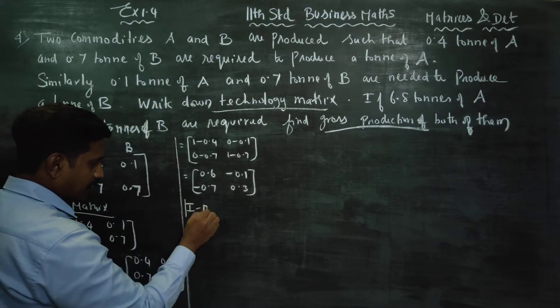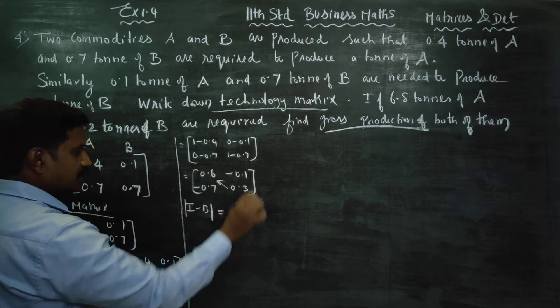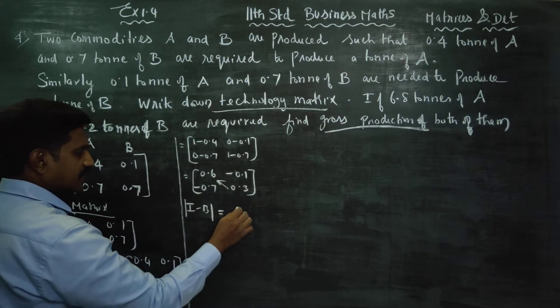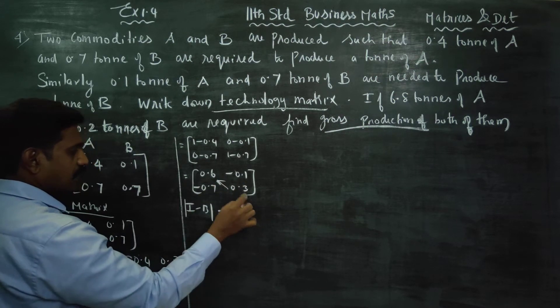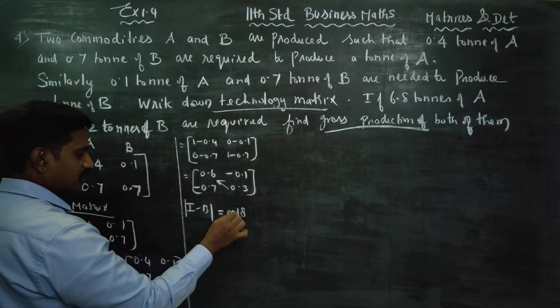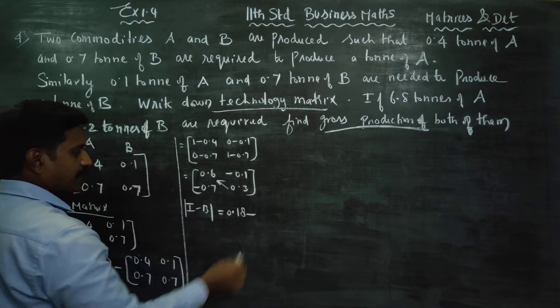Determinant of I minus B: 0.6 × 0.3 = 0.18, minus (-0.1) × (-0.7) = 0.07. So the determinant equals 0.18 minus 0.07 = 0.11.